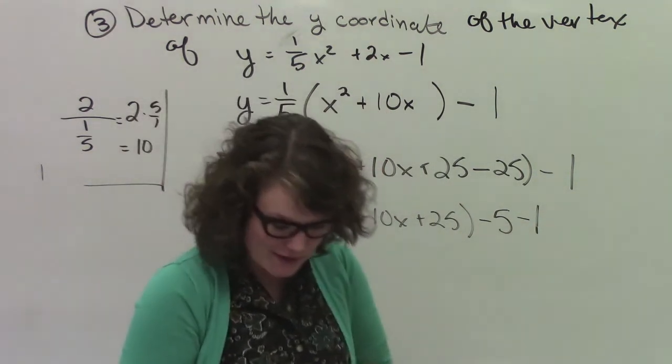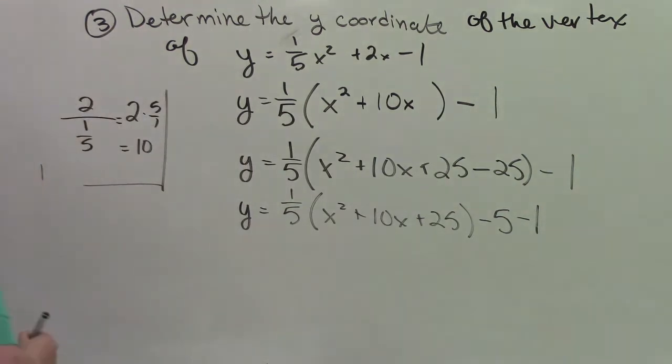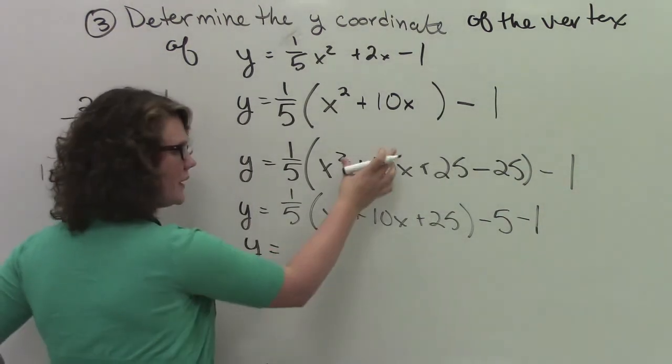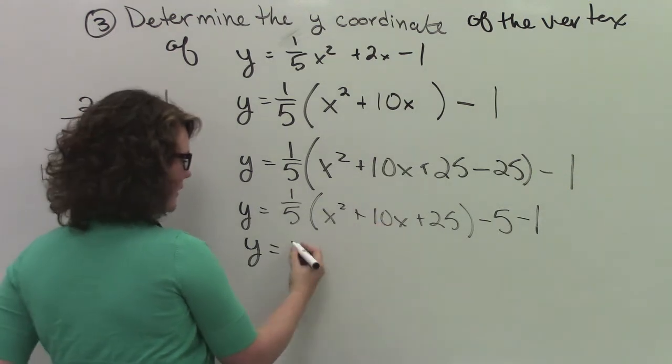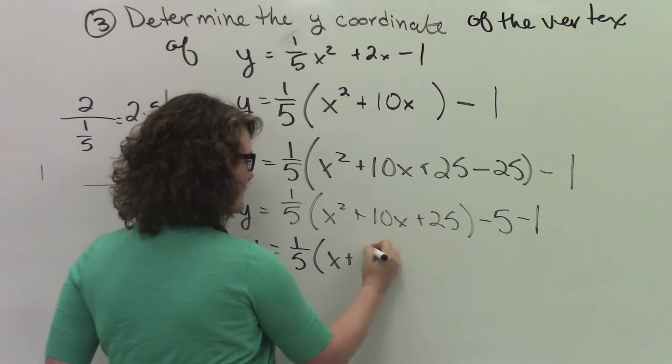So y equals 1 fifth times x squared plus 10x plus 25. 1 fifth times negative 25 is negative 5 minus 1. Some people are going to say, do I need to write this step?